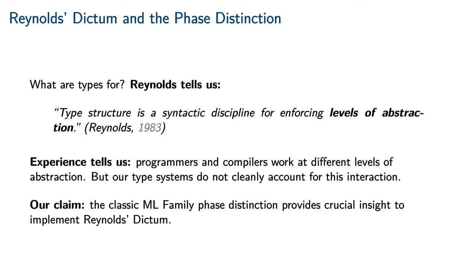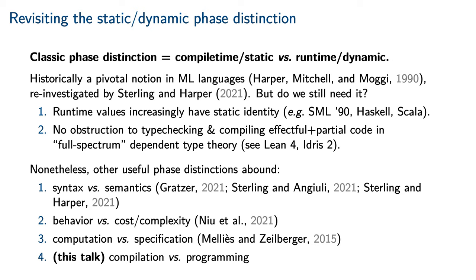Types do a lot of things, but it is worthwhile to pay attention to what Reynolds said types are for: type structure is a syntactic discipline for enforcing levels of abstraction. Our experience tells us that programmers and compilers are working at very different levels of abstraction — the programmer is introducing abstractions to protect themselves, but the compiler is eliminating these abstractions to generate efficient code. Unfortunately, our type systems do not cleanly account for this interaction. We claim that the classic ML family phase distinction provides crucial insight to actually implement Reynolds' dictum in a programming language. Traditionally, the phase distinction expresses the non-interference of runtime code on static code, and was a pivotal notion in the development and design of ML languages and their module systems.